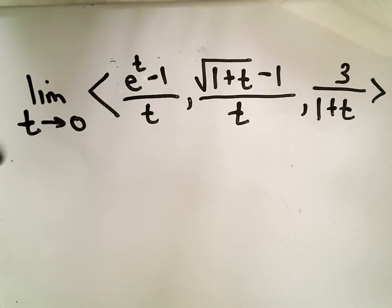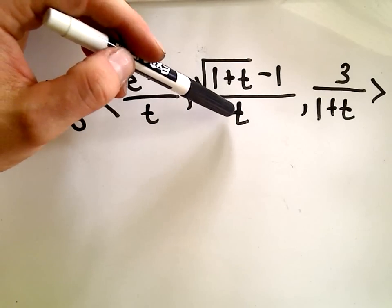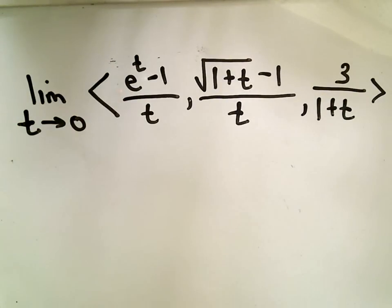So here we want to find the limit as t approaches 0, of e to the t minus 1 divided by t, the square root of 1 plus t minus 1 over t, and then 3 over 1 plus t.